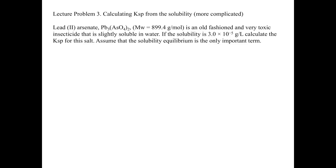Now let's look at a more complicated problem involving lead arsenate, Pb₃(AsO₄)₂. It's an old-fashioned, very toxic insecticide that is slightly soluble in water. If the solubility is 3.0 times 10 to the minus 5 grams per liter, calculate the Ksp. We assume solubility equilibrium is the only important equilibrium because the arsenate anion is slightly basic, but that competing effect is beyond the scope of general chemistry, so we ignore it.